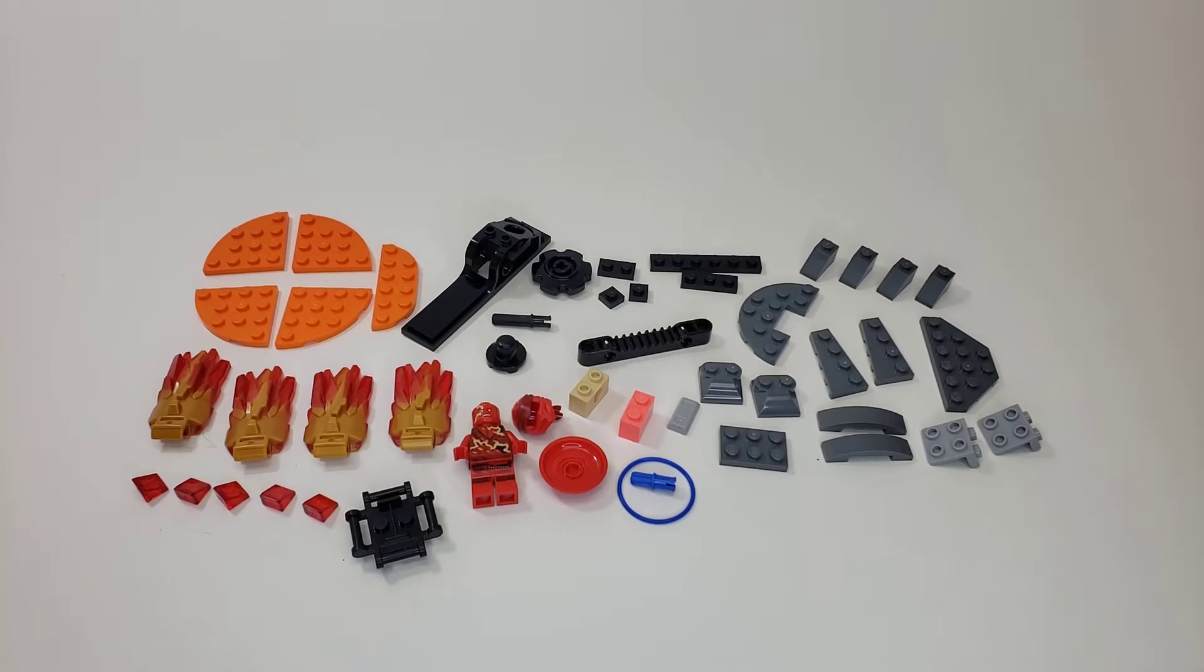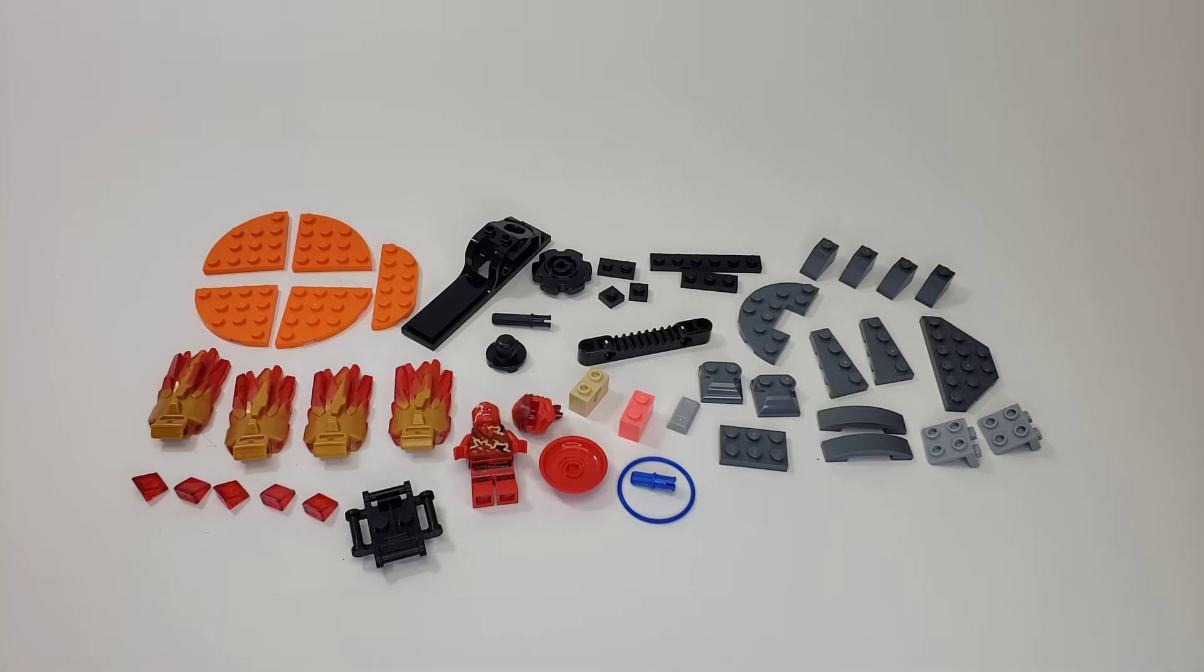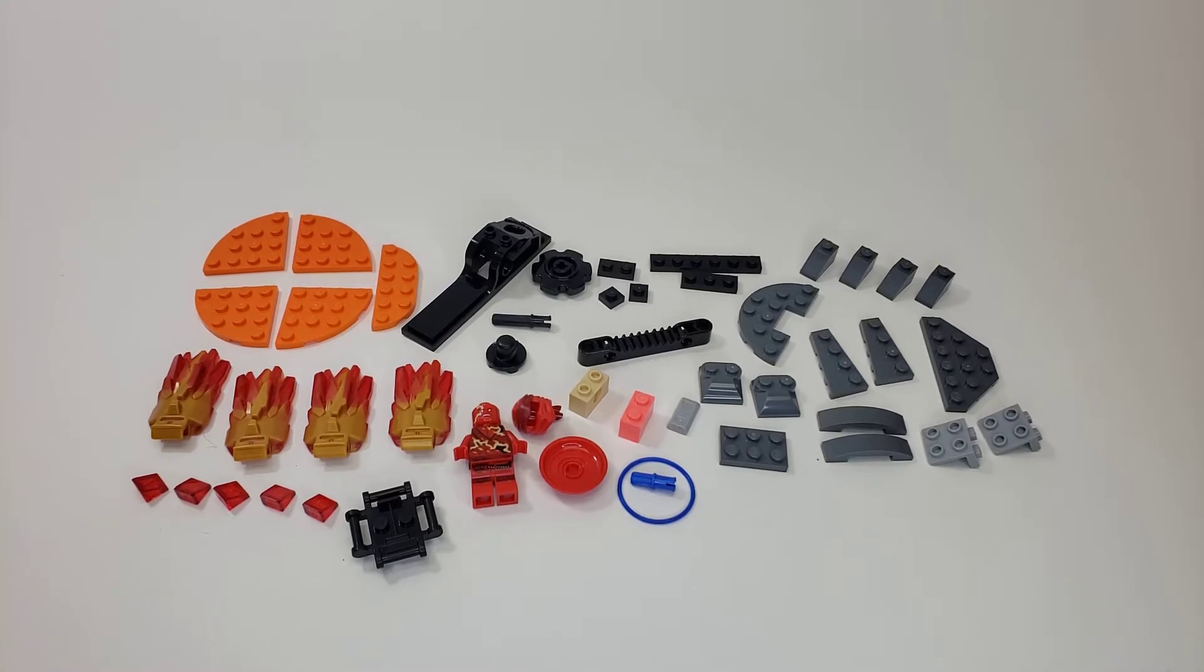This is Spinjitzu Burst Kai, set number 70686, and it has about 50 pieces. These little toy-type, top-type things, I always like getting at least one to check out what Ninjago is offering for new pieces and stuff.